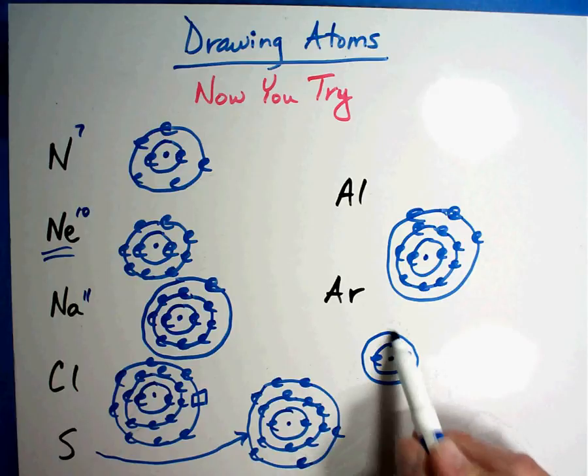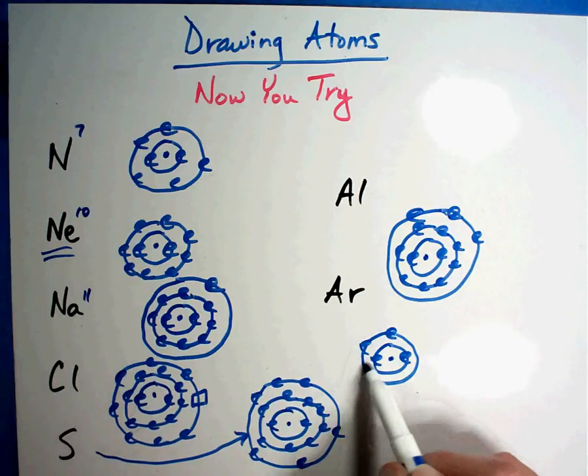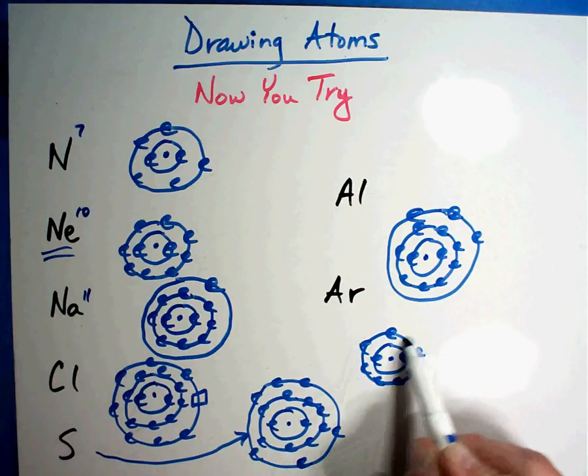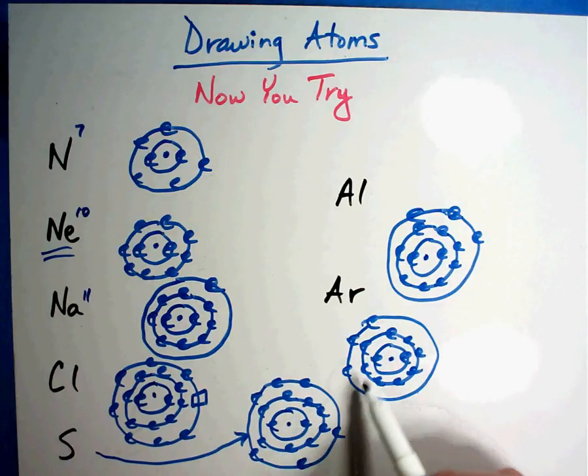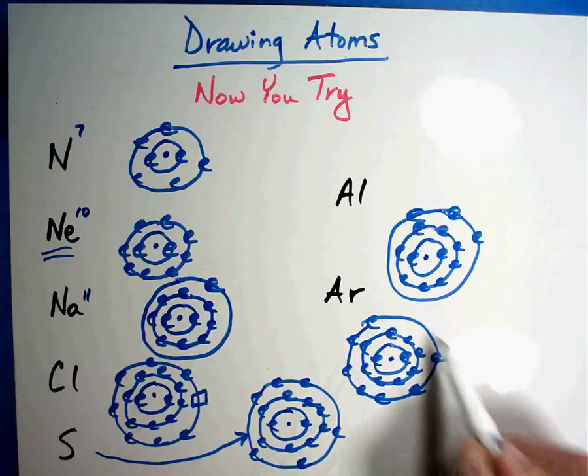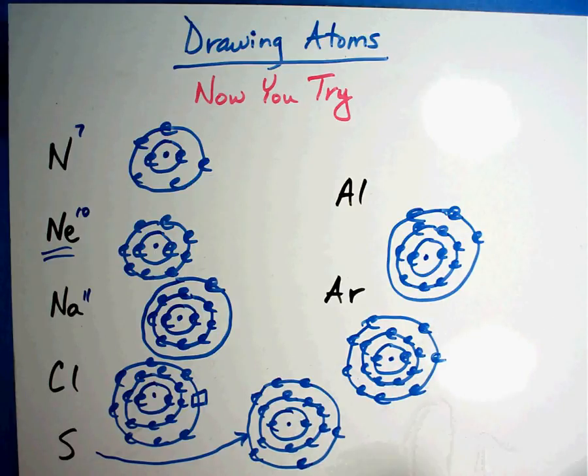Argon is element number eighteen. Two, three, four, five, six, seven, eight, nine, ten. Two and eight is ten. We've got eight more. One, two, three, four, five, six, seven, eight. Wow.